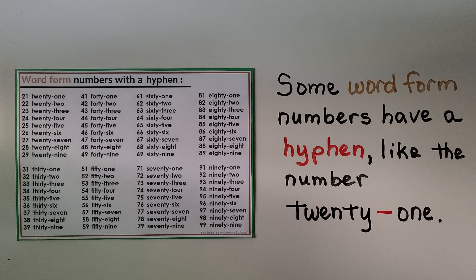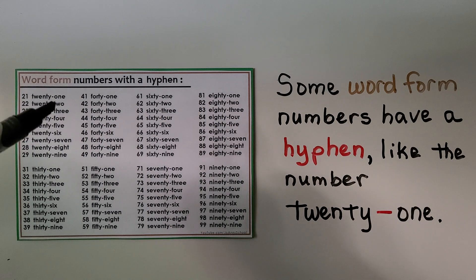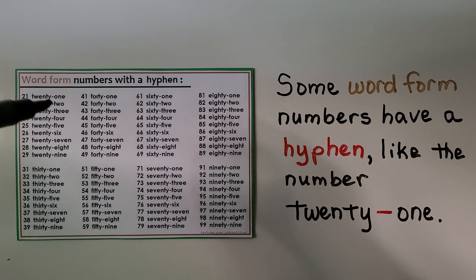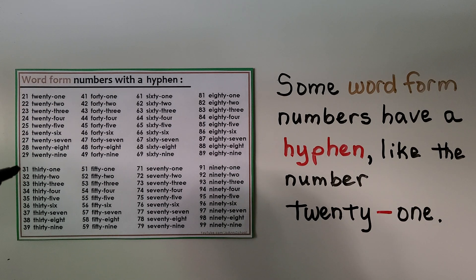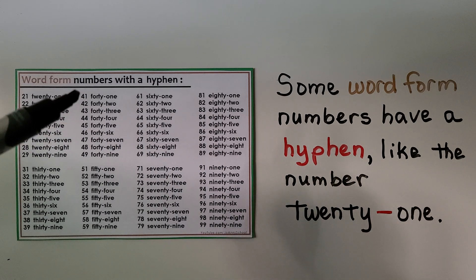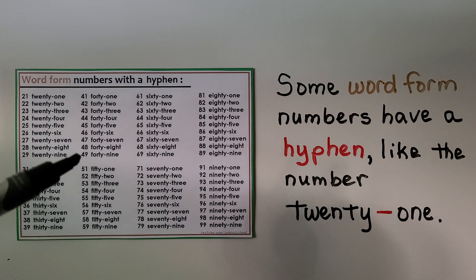Some word form numbers have a hyphen, like the number 21 — there's a hyphen between twenty and one. It goes from 21 to 29 with hyphens, then skips 30 and goes from 31 to 39 with hyphens. Then it skips 40, and from 41 to 49 they have a hyphen. Do you see the pattern?